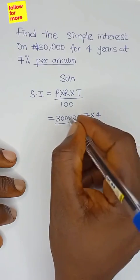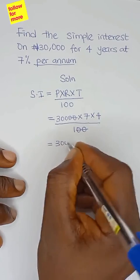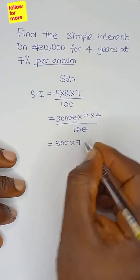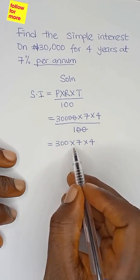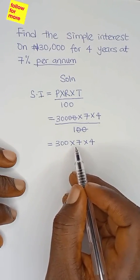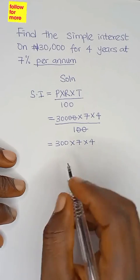Two zeros will cancel out two zeros, so we have 300 × 7 × 4. 300 multiplied by 7 gives us 2,100.